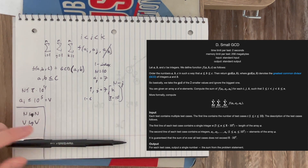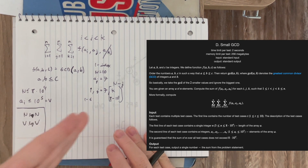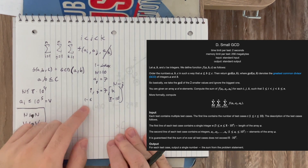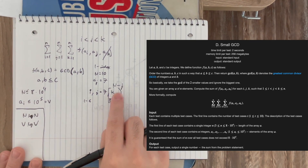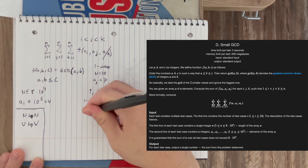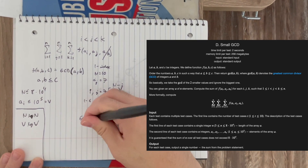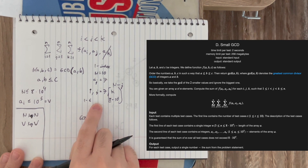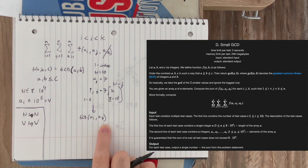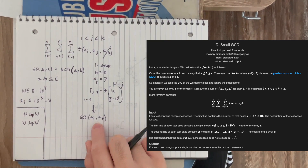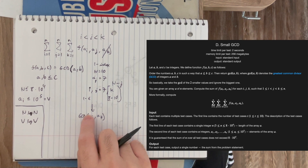Now let's focus on indices i and j. If we fix index j (say j=7), then i ranges over all indices 1 through 6. Since a[k] is guaranteed to be the largest element, the contribution of each triplet is always gcd(a[i], a[j]). If we have an efficient way to store and retrieve this information, we're done with the problem.